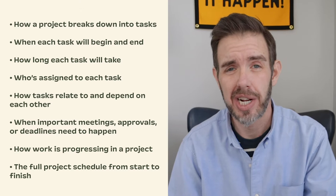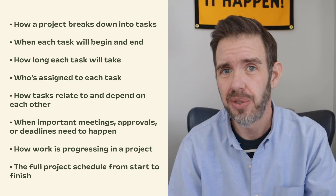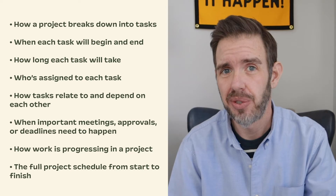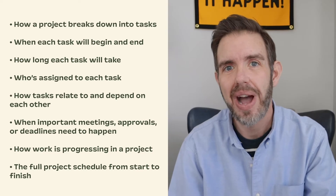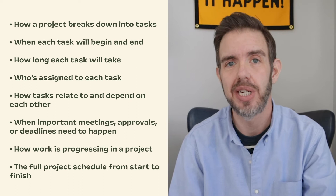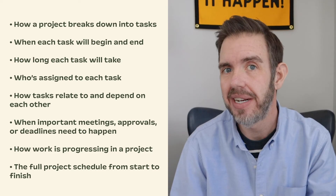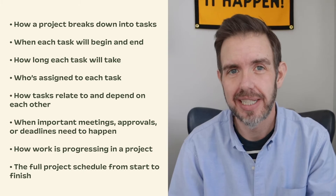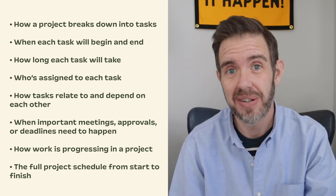That story tells me and my team how a project breaks down into tasks, which immediately shows everything that needs to be done on the project. Then it shows when each task will begin and when each task will end, which you need to communicate in terms of deadlines to stay on top of things so that you can deliver your projects on time. I also like the fact that in Gantt charts, like in TeamGantt, I can show how long each task will take in terms of estimated hours as well as calendar time. The Gantt chart will also show who's assigned to each task, so there's no confusion about responsibility. Gantt charts also show how tasks relate to and depend on each other. Your Gantt chart will show when important meetings, approvals, or deadlines need to happen, and they're typically signified by milestones — I did an episode about that on Coffee with Brett, so definitely check that out if you want to learn more.